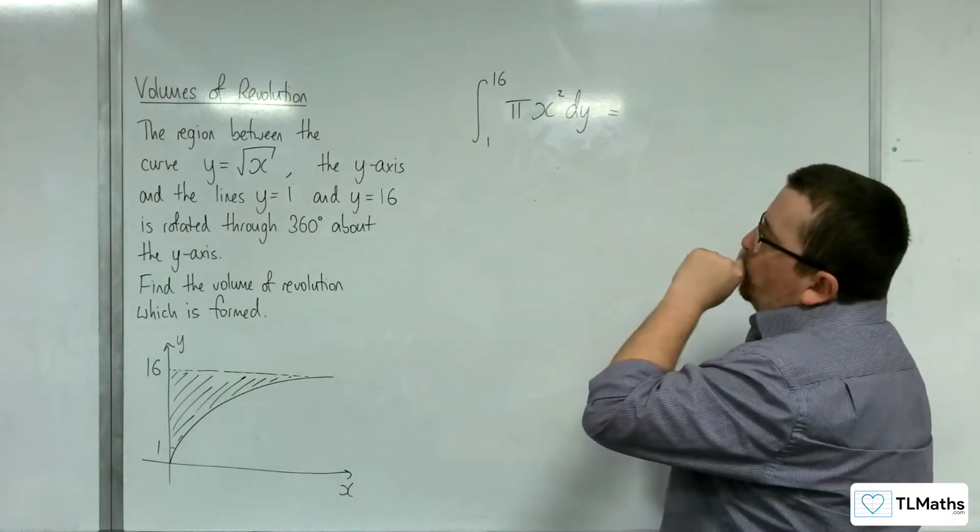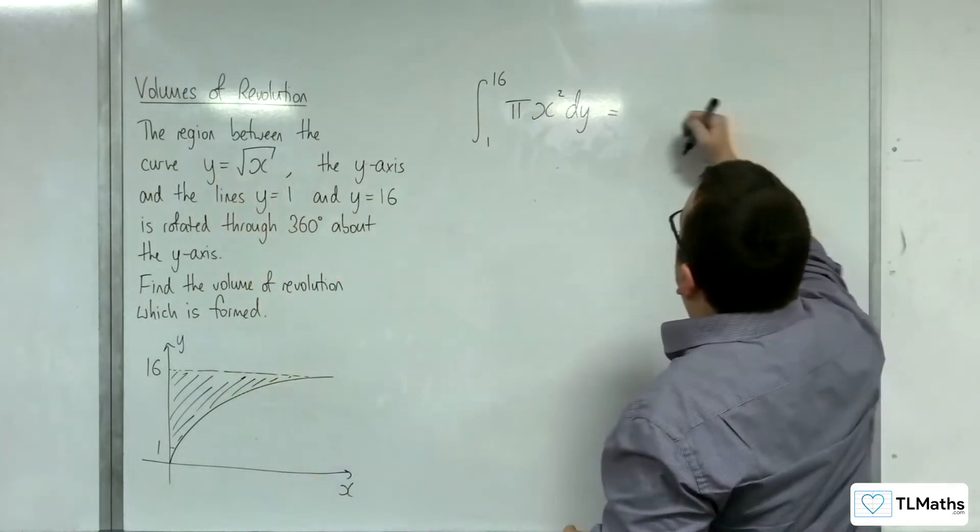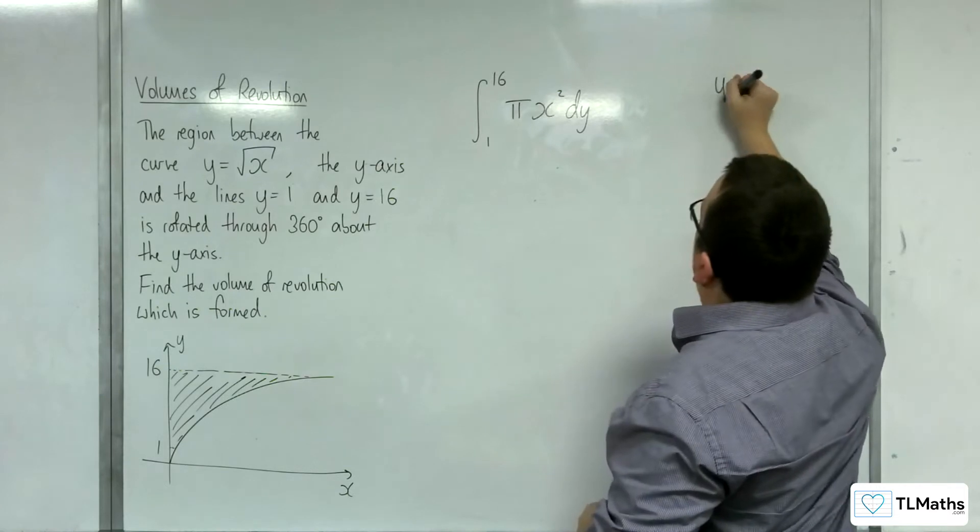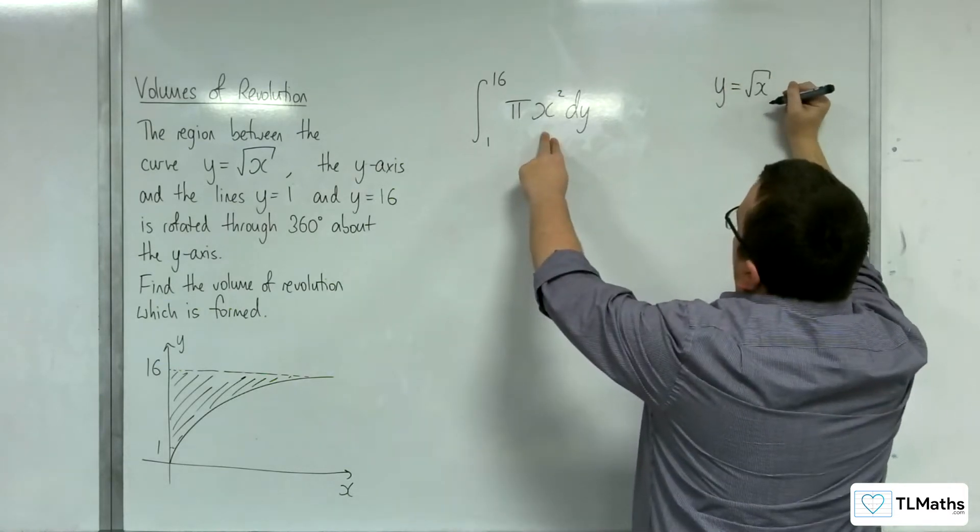So, if we square both sides, we're going to get, so let's write this over here, actually. So, y is equal to root x, and I need x squared. So, if I square both sides,